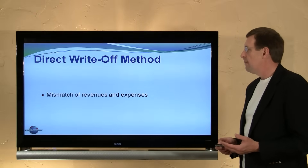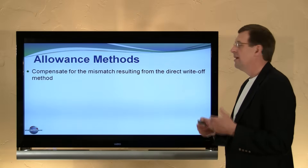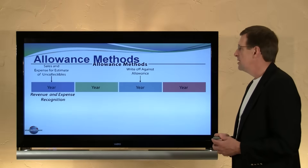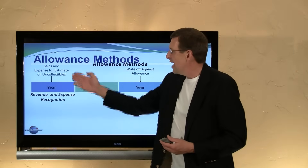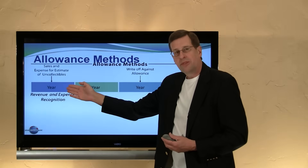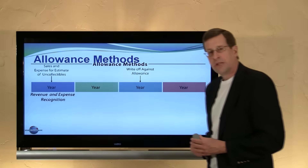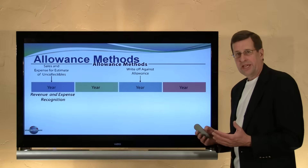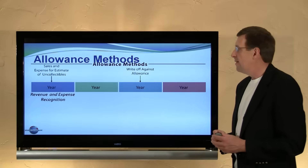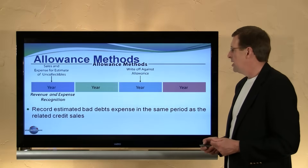So generally accepted accounting principles prefer and require, if material, an alternative allowance method that results in a better matching of revenues and expenses. With an allowance method, we have sales and expenses for the bad debts recorded in one period — we estimate the amount that we're not going to collect and record that estimate as an expense in the same period that we record the sale. Later, when we write off a specific account, there's no charge against income; we're instead writing it off against an allowance account that was established back in year one.